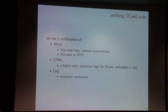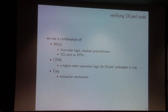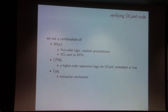We want them to collaborate as smoothly as possible. From one side, we have Why3, which is mainly a first-order verification tool equipped with a first-order specification logic. It has a calculus for generating verification conditions — the VC gen — where the generated VCs are normally sent to automatic provers. We also use the CFML tool, which features a very rich higher-order separation logic for OCaml and is embedded in Coq.